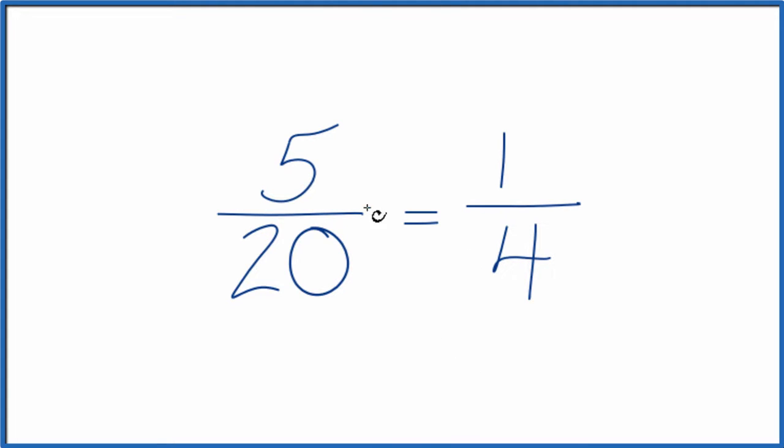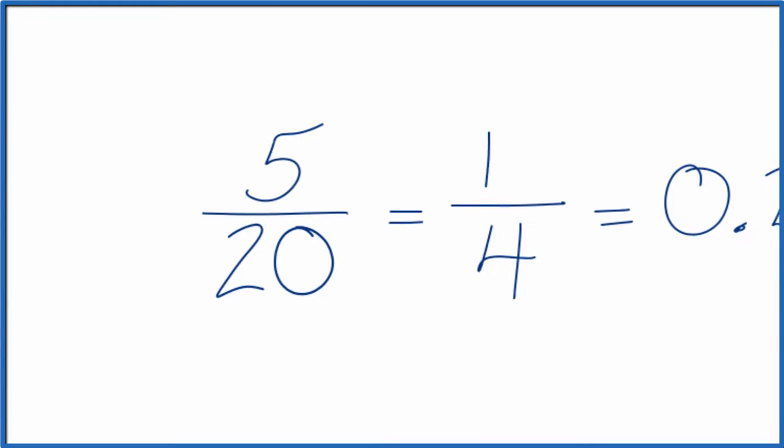If on our calculator we divide 5 by 20 or 1 by 4, we get the decimal 0.25. So that's our decimal. 5/20 as a fraction equals the decimal 0.25.